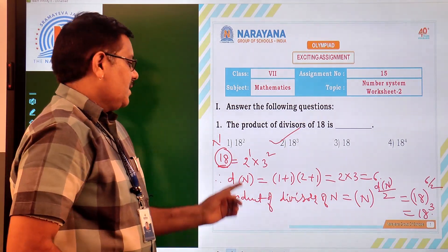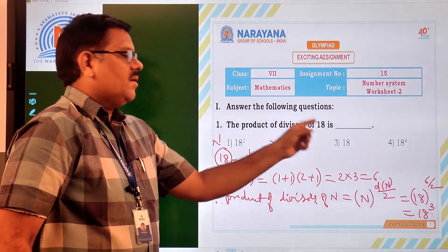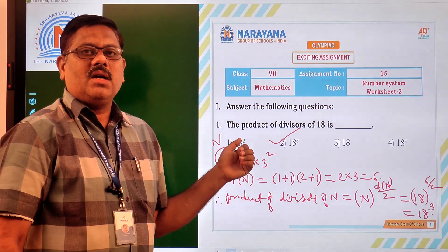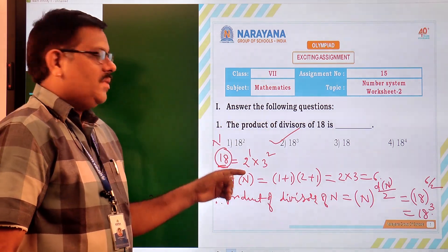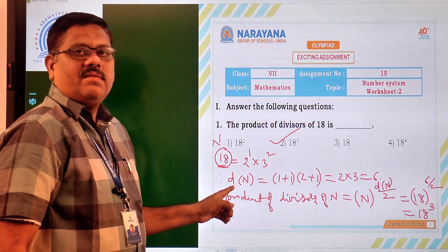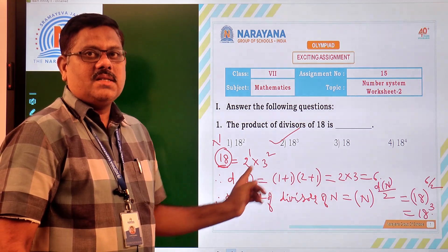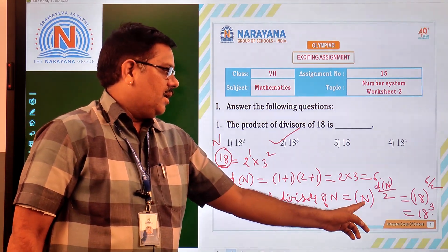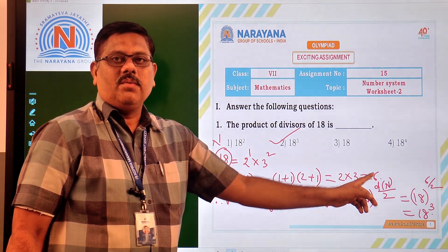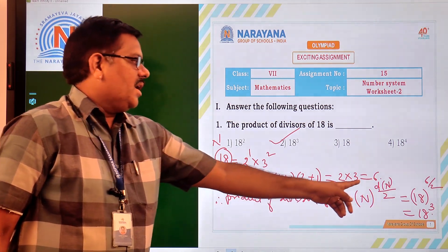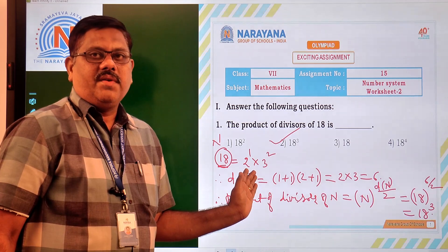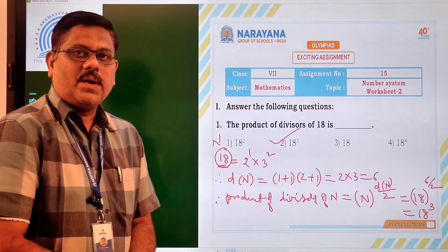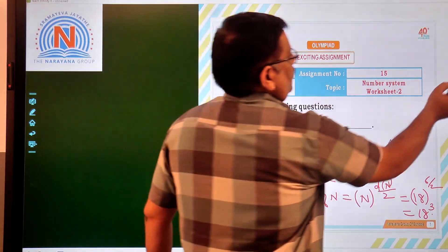The procedure: first step, convert the given number n into product of primes — the standard form. Second step, find its number of divisors d(n). Then, product of divisors of n is given by n^(d(n)/2), where n is the given number. Substituting the values gives the required answer.